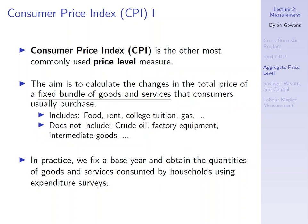The other way of measuring aggregate prices is the consumer price index, which is the most commonly used price level measure. This is the price level measure used by many central banks — for example, the Bank of Canada relies mainly on the consumer price index when it calculates inflation. The aim is to calculate the changes in the total price of a fixed bundle of goods and services that consumers usually purchase.